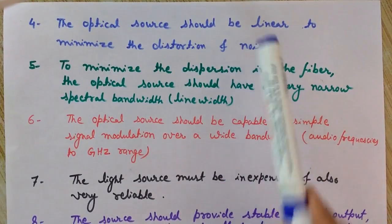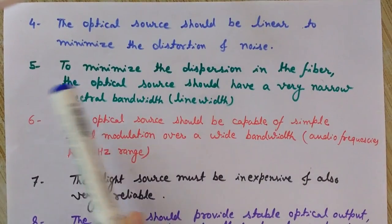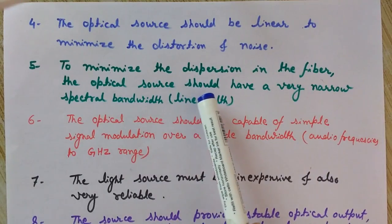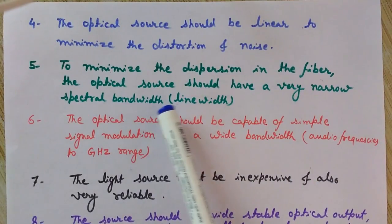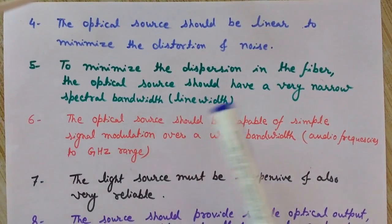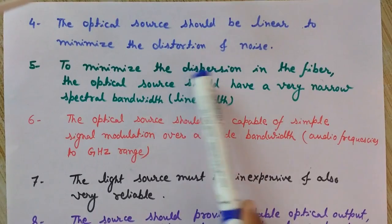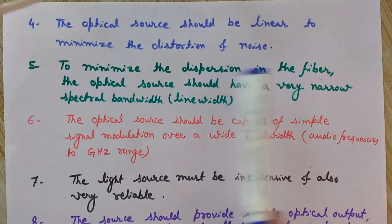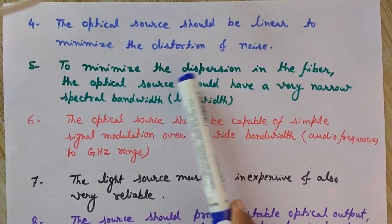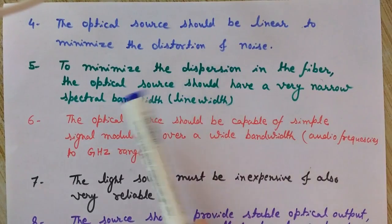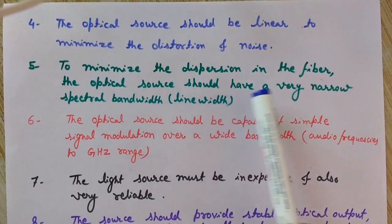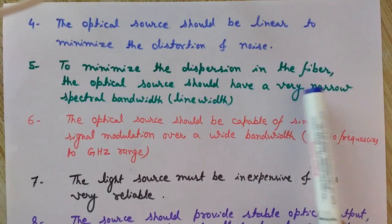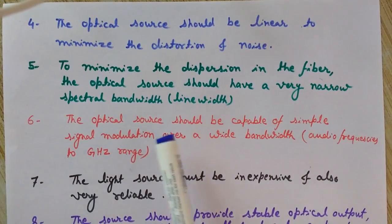The fifth point: to minimize dispersion, the optical source should have a very narrow spectral bandwidth — that is, a narrow linewidth. Since dispersion means the spreading of light rays when they travel through the optical fiber, we need the least dispersion, ideally zero. So the spectral bandwidth of the optical fiber source should be as narrow as possible.